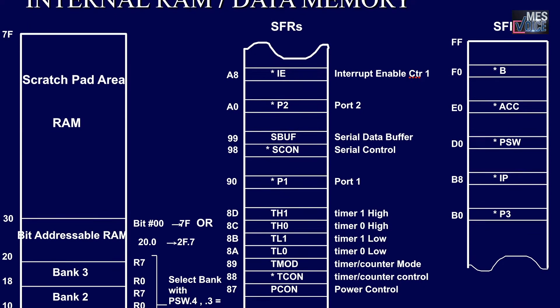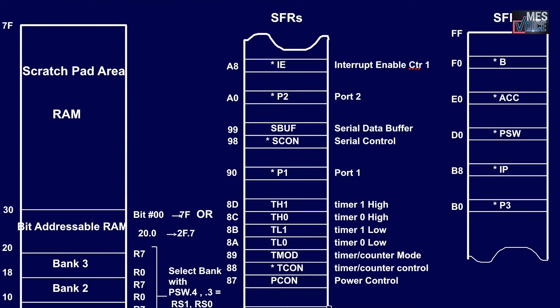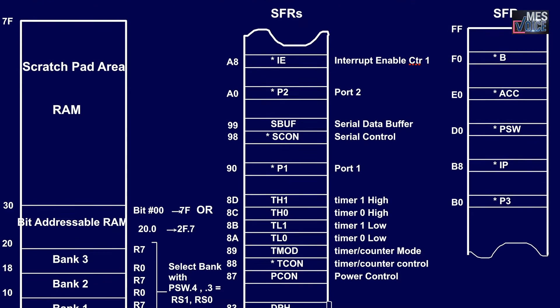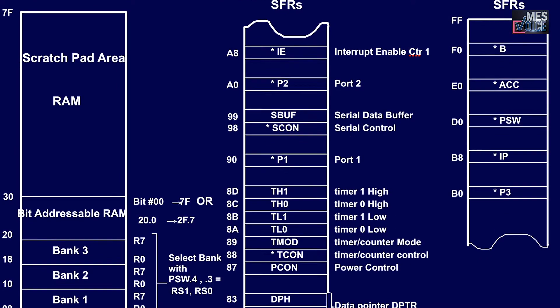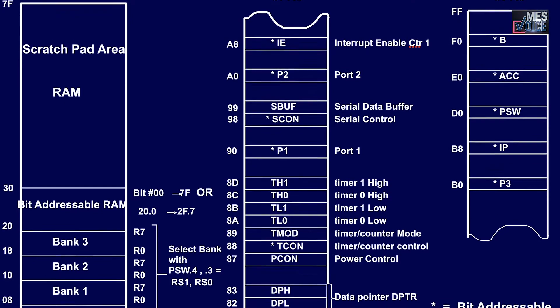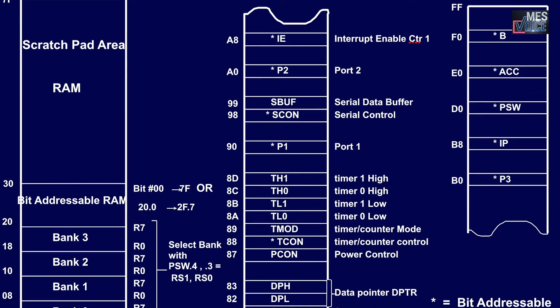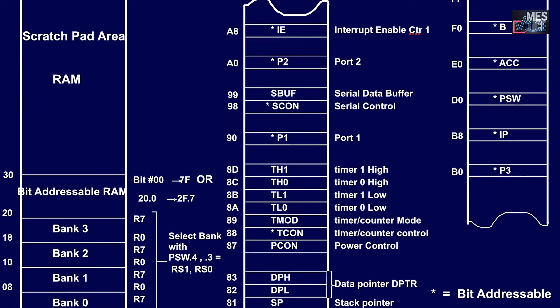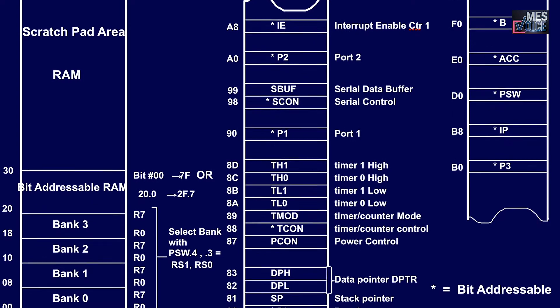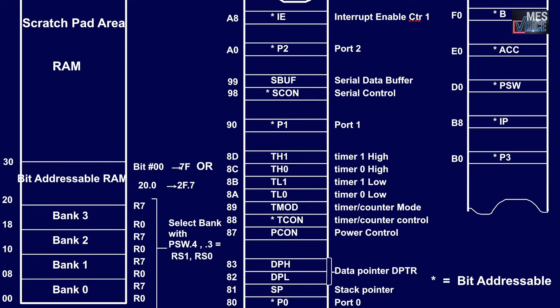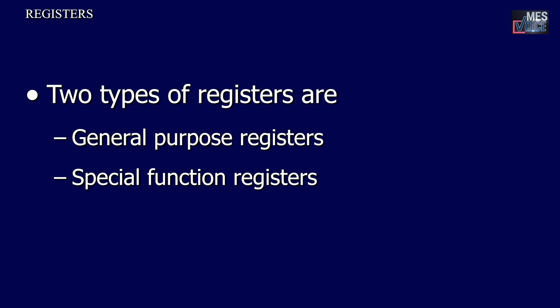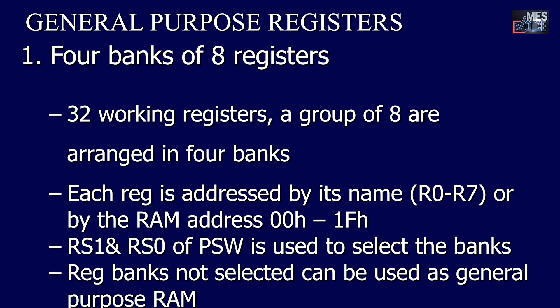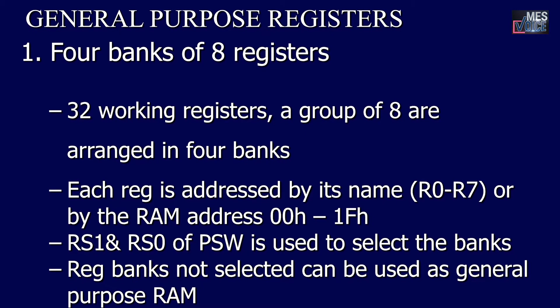This figure shows the internal RAM. The address locations 00H to 7FH show the internal RAM which can be accessed by the user, and the address locations from 80H to FFH are used as the special function registers. There are two types of registers: general purpose registers and special function registers.